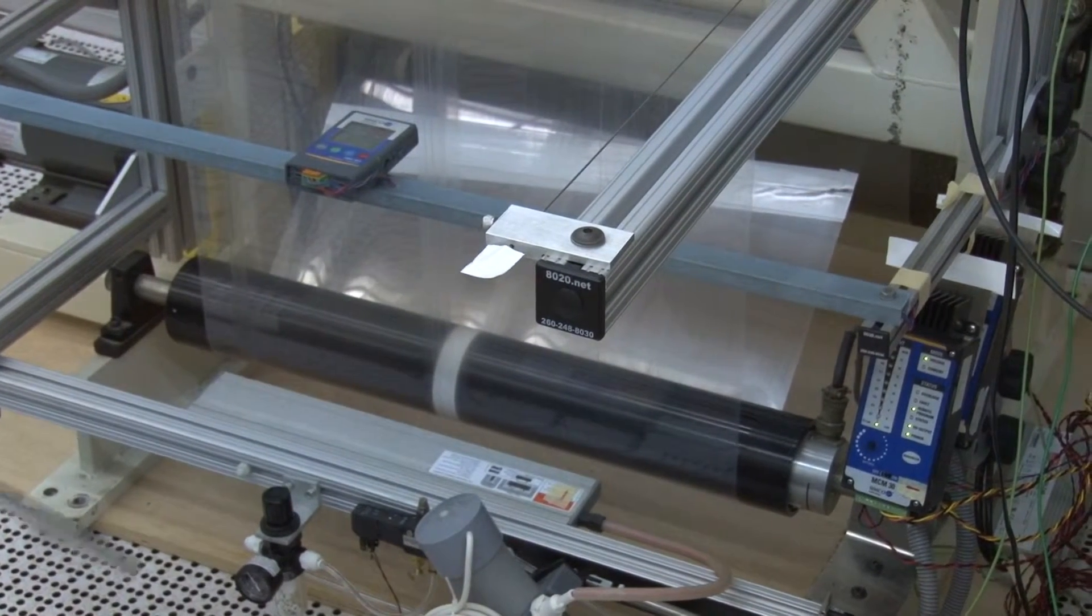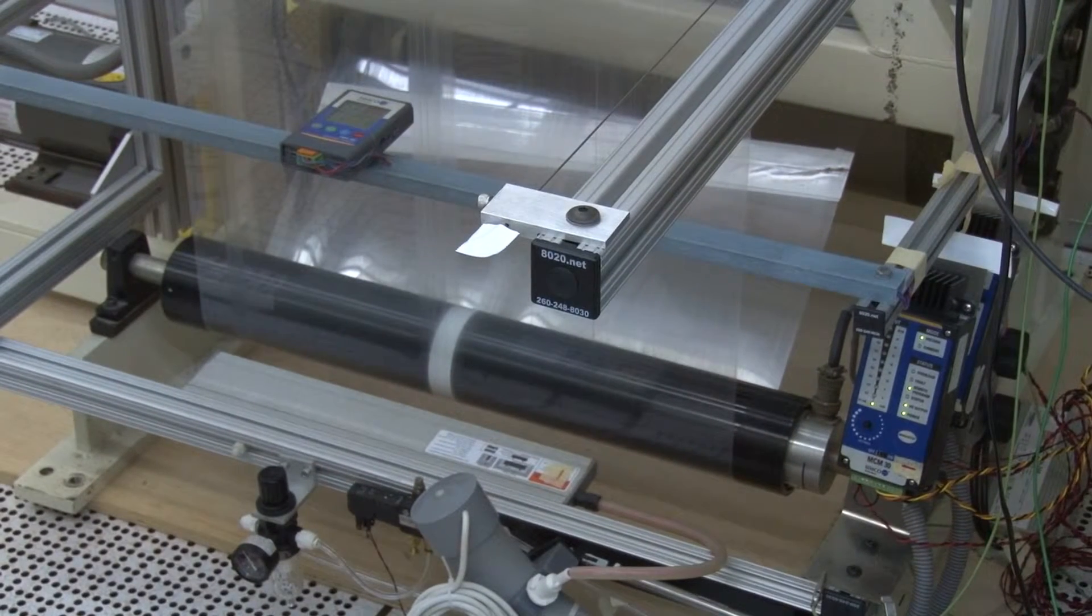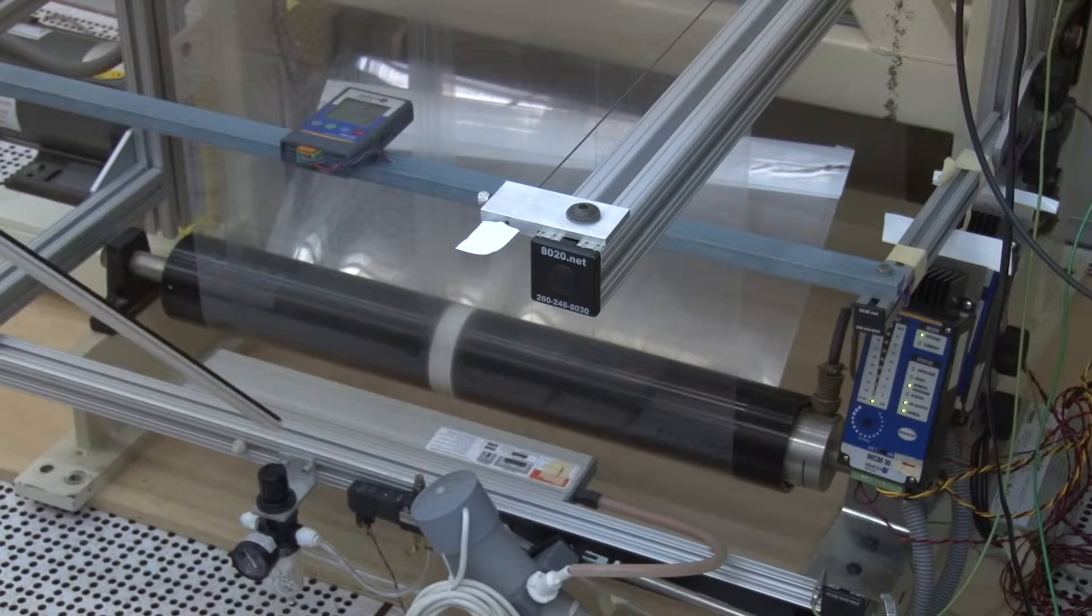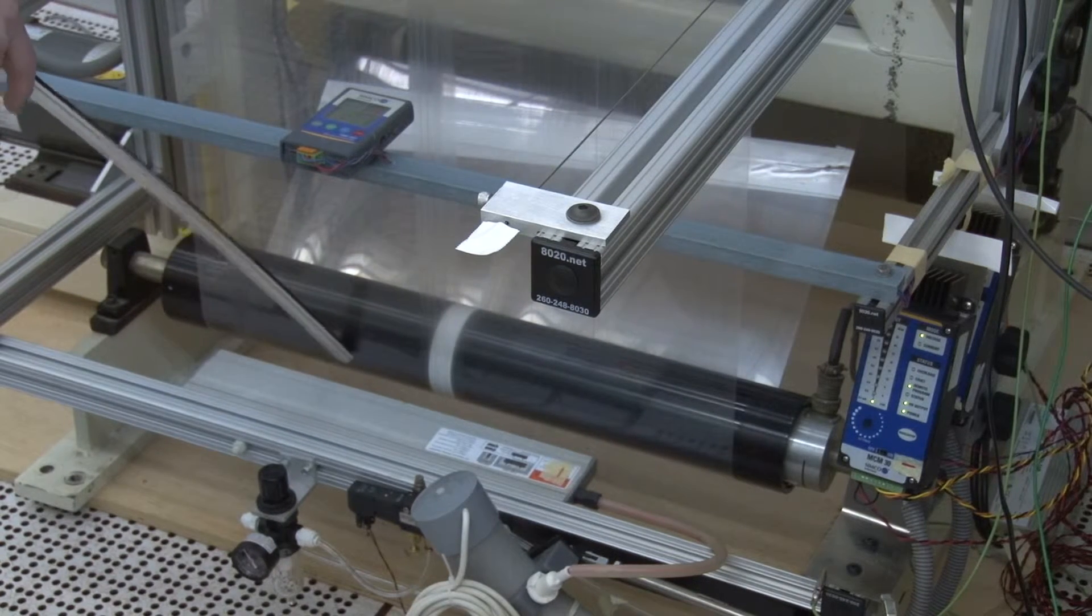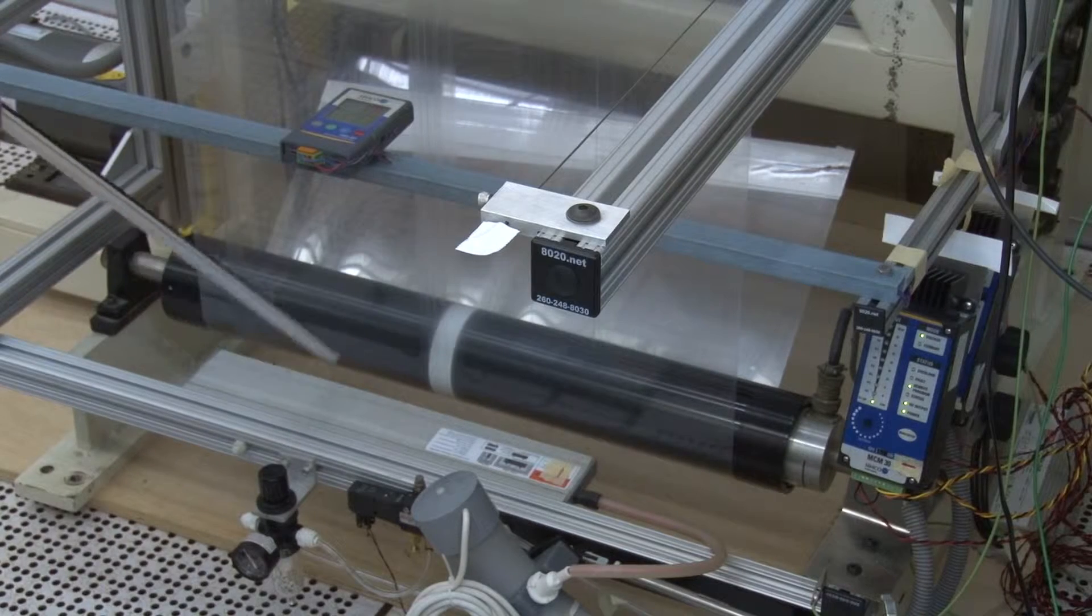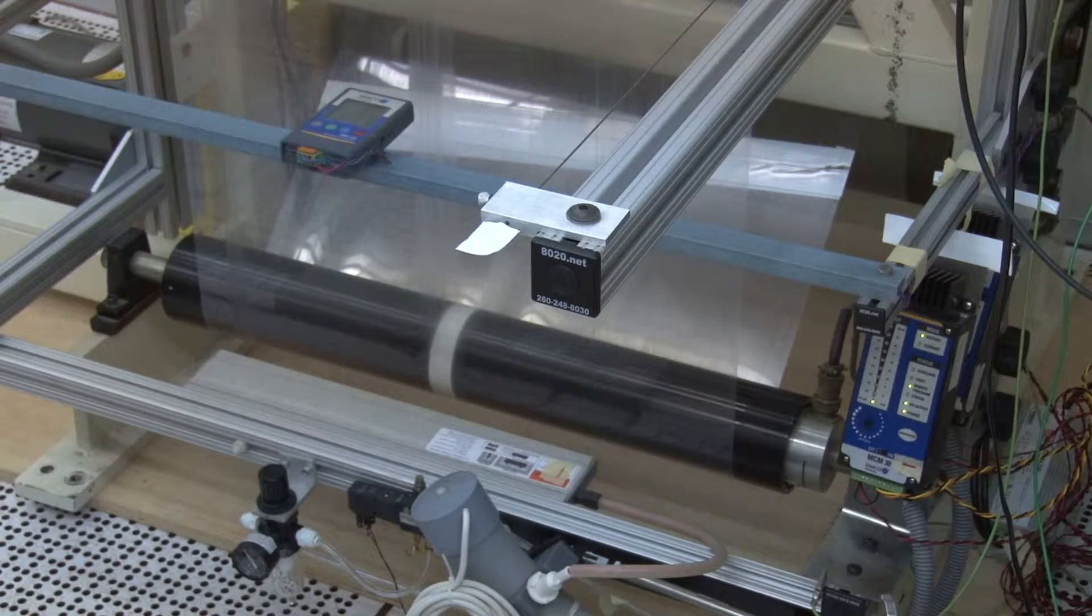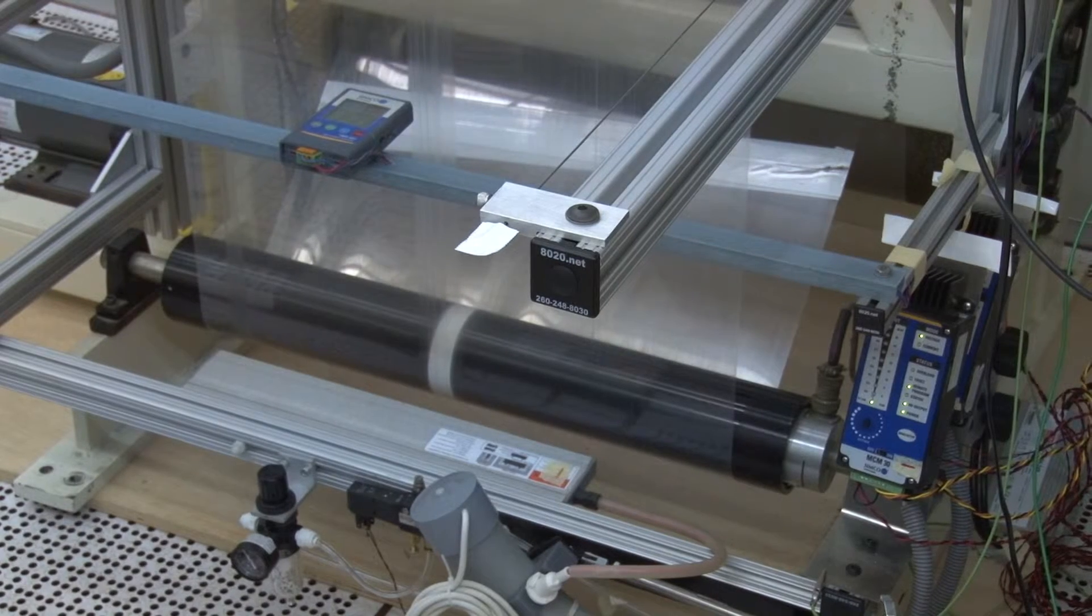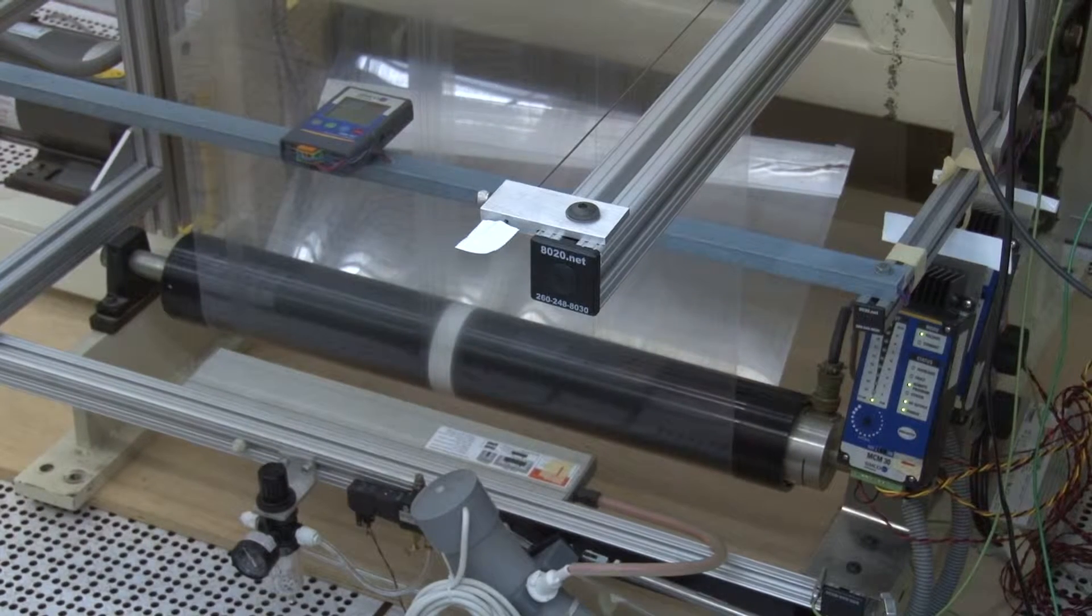One of the questions that we get is, how can we, with a 30 kV power supply, wind up with a web charge of 50,000 volts? You'll notice that we're actually proximate to this grounded roller here. So when we charge the material, it's actually pinned to this roller and then stripped off. So we're utilizing kind of like a triboelectric effect, which boosts the total charge on the web.